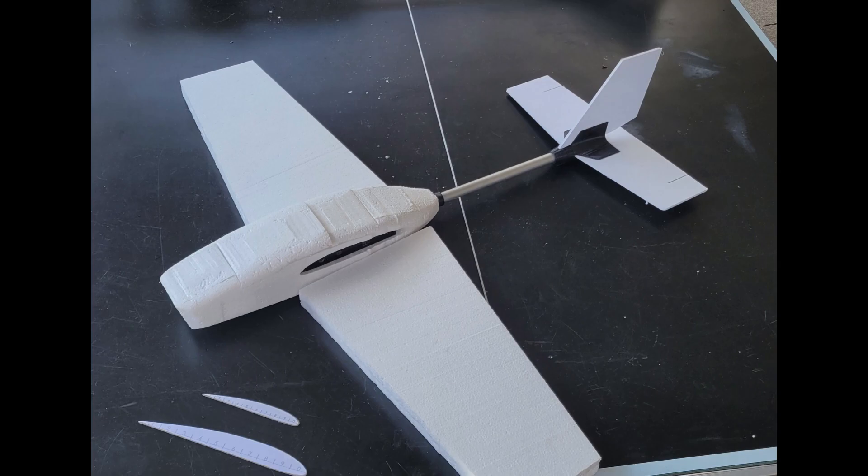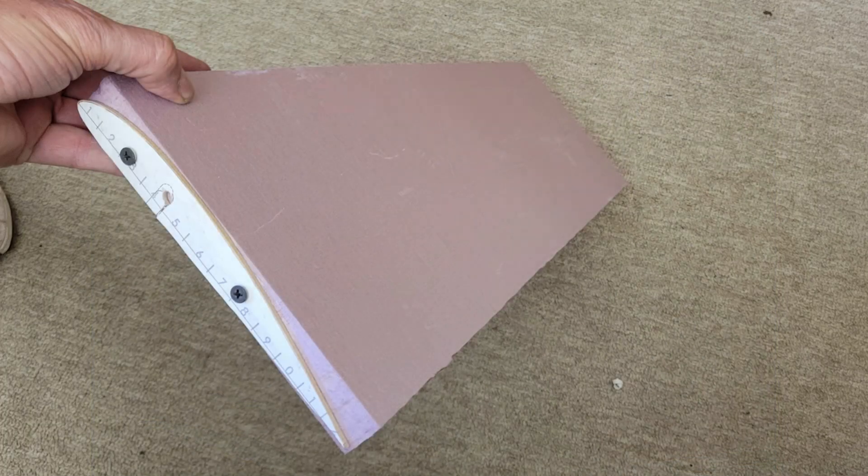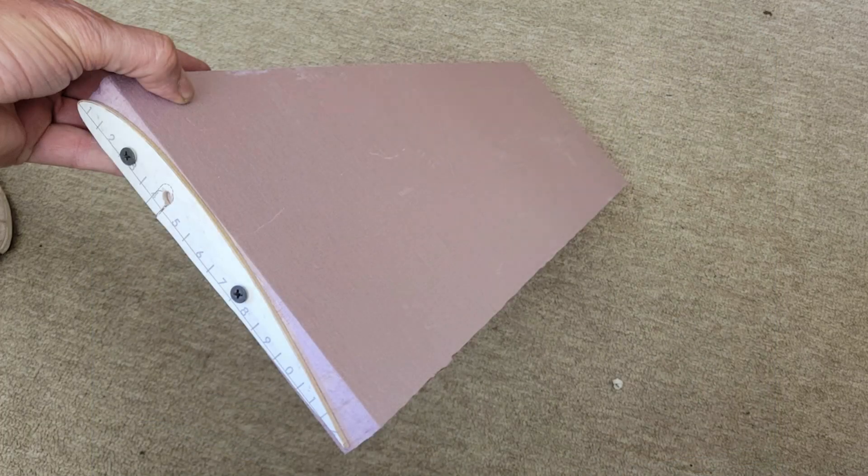And I've cut out the foam core blanks from the less dense polystyrene that, as I mentioned in the opening, did not work out too well. And here I'm mounting the wooden rib templates on the ends of the foam blank.